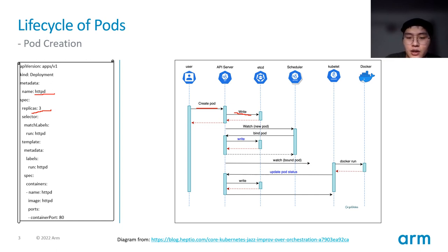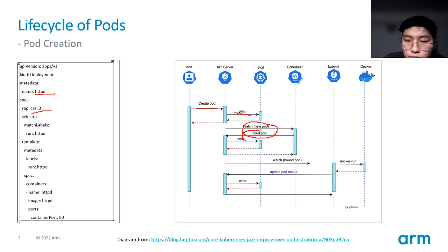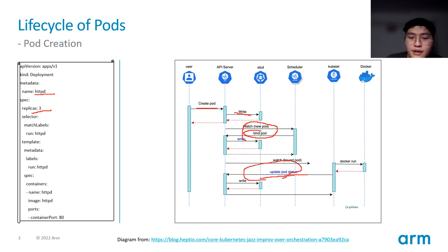Then the scheduler will find that there are new pods and bind them to a node that fits the requirements. The kubelet notices that the new pod is bound to a node. The kubelet will call Docker or other container runtimes to create containers. At last, the kubelet will update the pod status to the API server and the API server writes it to etcd.